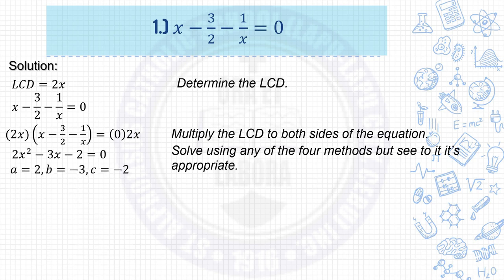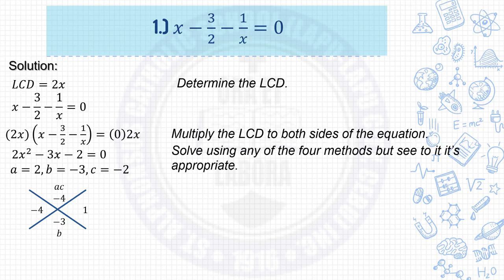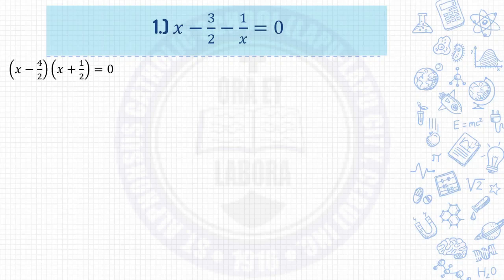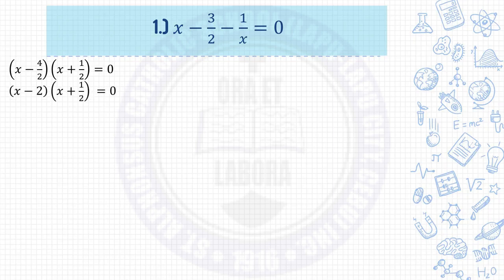Determine the values of a, b, and c. Here, a is 2, b is negative 3, c is negative 2. We will use solving quadratic equation by factoring. Draw the x mark, determine a, c, and b. a times c is 2 times negative 2, which is negative 4. b is negative 3. The factors of negative 4 are negative 4 and 1, and when added they give negative 3. Write quantity x minus 4 over 2 times quantity x plus 1 over 2 equals 0, then divide by a equals 2. Simplified: quantity x minus 2 times quantity x plus 1 half equals 0.